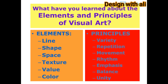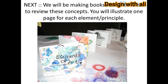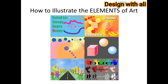What have you learned about the elements and principles of visual art? Elements include line, shape, space, texture, value, and color. Principles include variety, repetition, movement, rhythm, emphasis, balance, and unity. Next, we will be making books similar to these to review these concepts — you will illustrate one page for each element and principle.